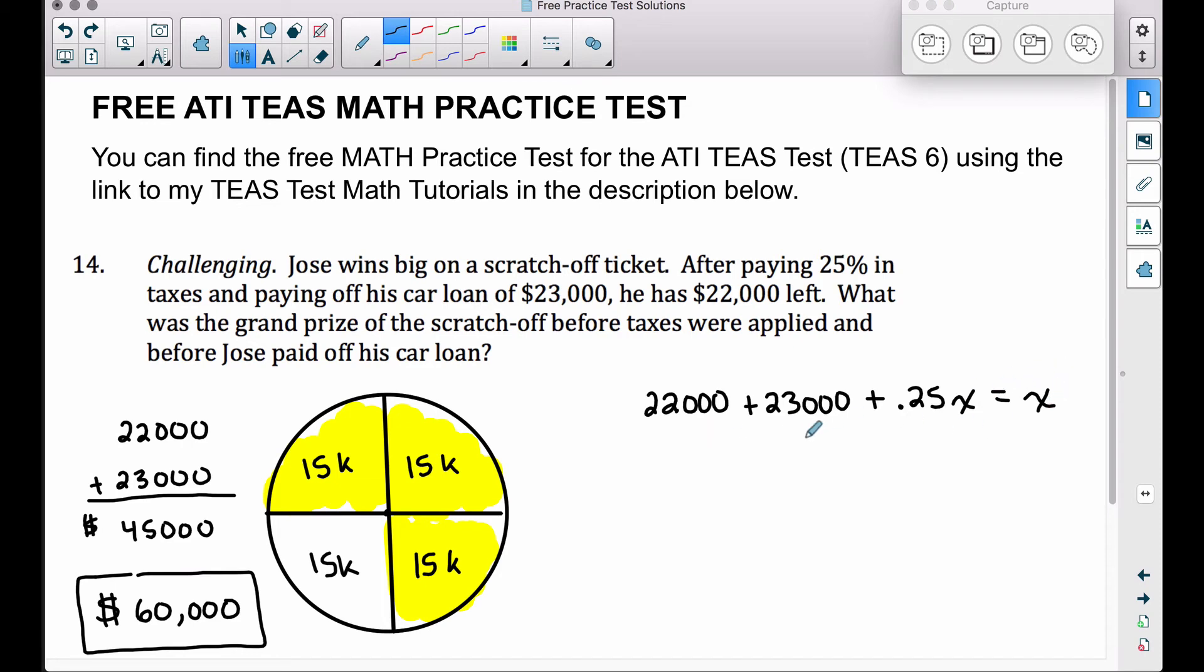Combining like terms here: $22,000 plus $23,000 is the $45,000 plus 25% of his winnings equals his total winnings. Let's move the 0.25X over here by subtracting it from both sides. That's going to cancel out these 0.25X over here. Let's bring down our $45,000. And then over here on the right hand side, this is an understood 1X, his total winnings, minus 25% of his winnings represents 75% of his winnings. There's that 75% again.